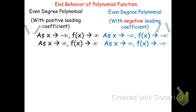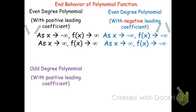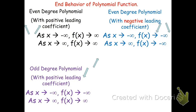Now odd degree polynomials are ones where the end behavior goes in different directions. If we have an odd degree polynomial with a positive leading coefficient — for instance, x cubed — if I take a negative number and multiply it three times, I'll still have a negative, which tells me the end behavior as I go left is going to go down. But if I take a positive number and multiply it three times, my result will be positive, meaning it goes up. So as x goes to positive infinity, f of x goes to infinity.